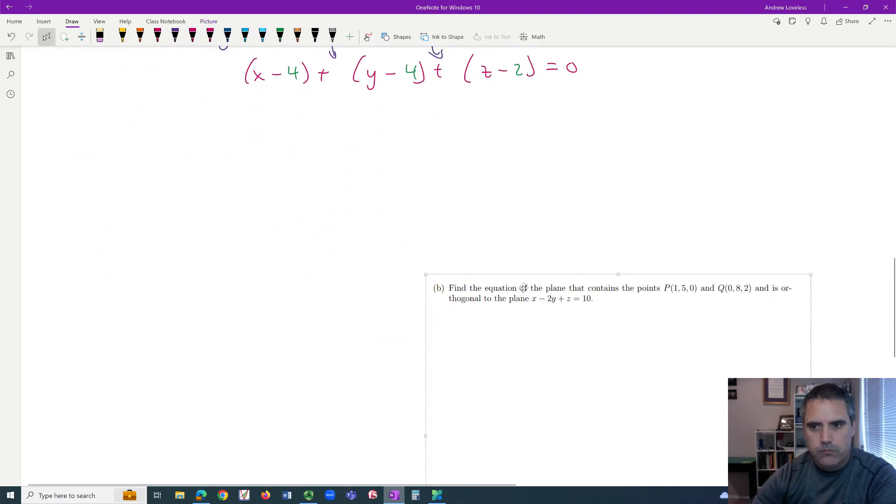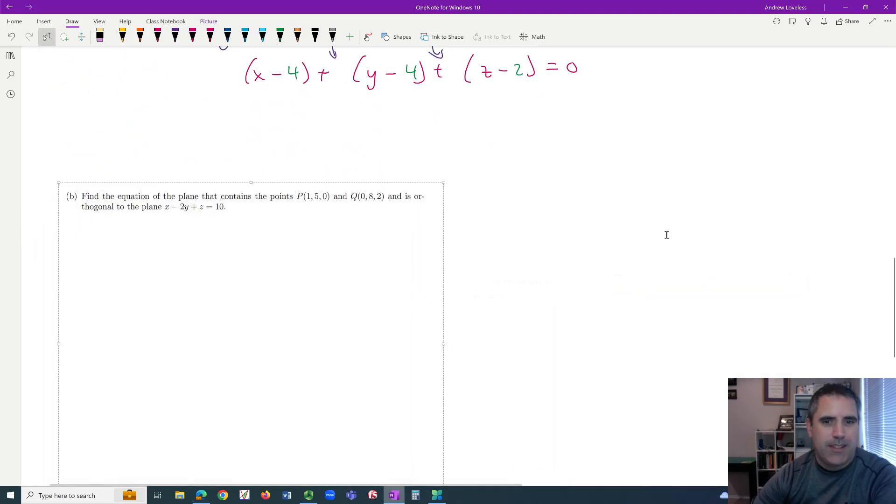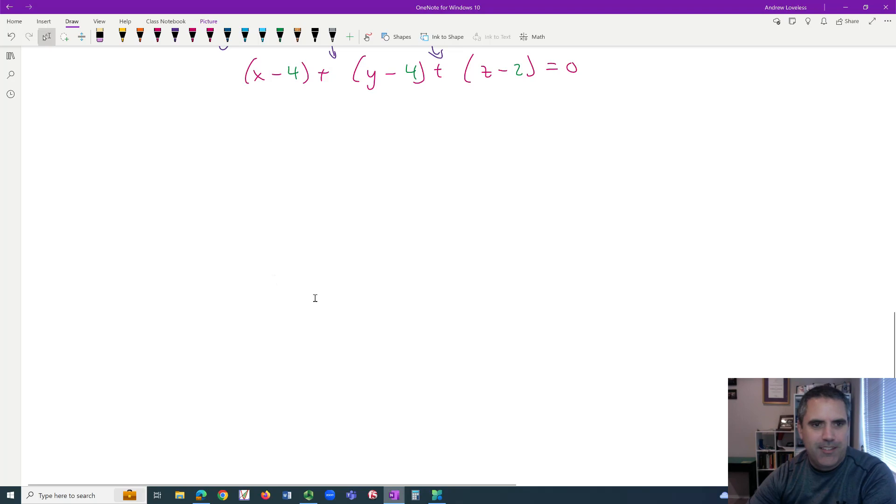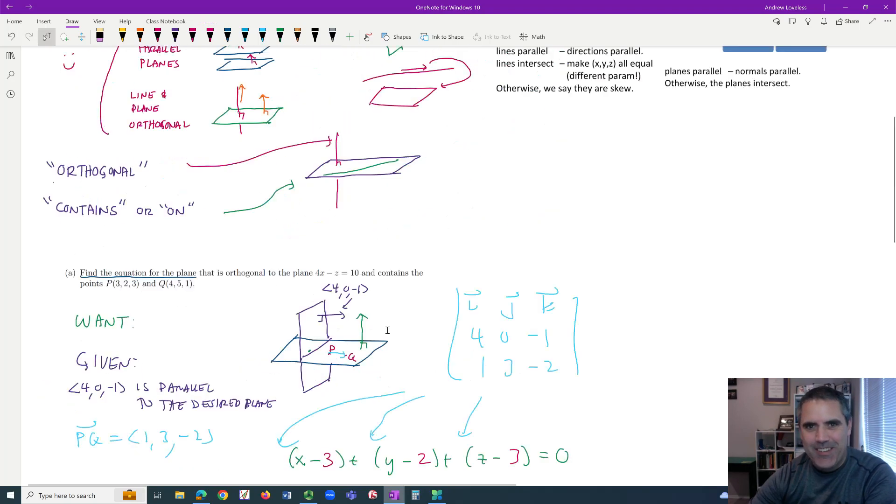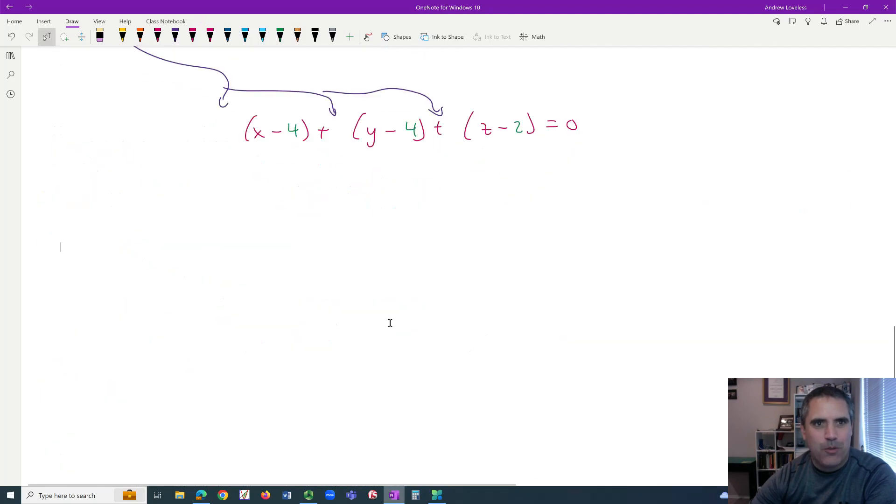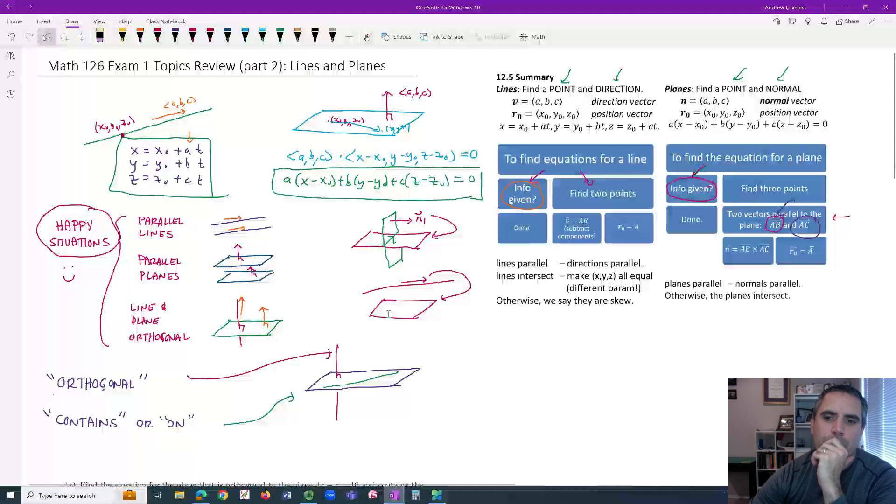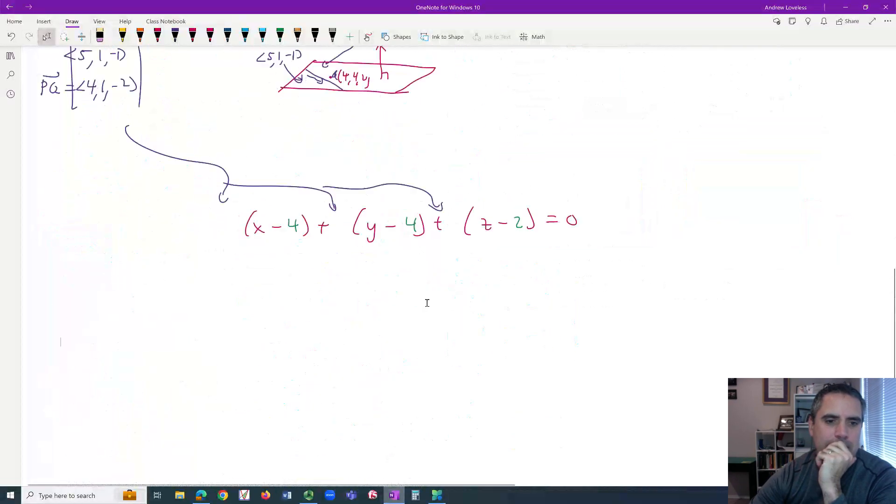Let's keep going. Find the equation of the plane that contains these two points and is orthogonal to this other plane. Oh, that's just like the first question. Boring. Where are the rest of the questions? I thought I grabbed a few more.